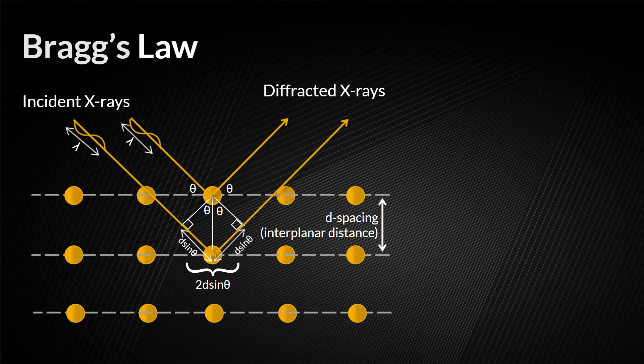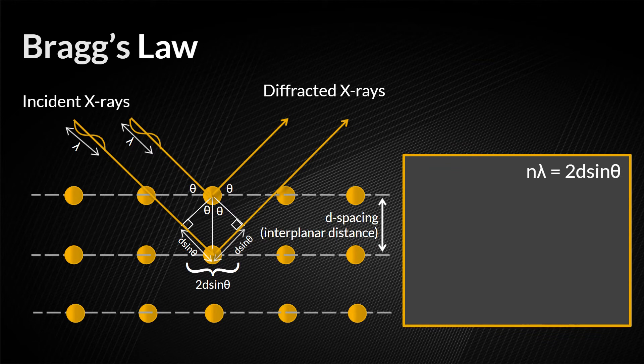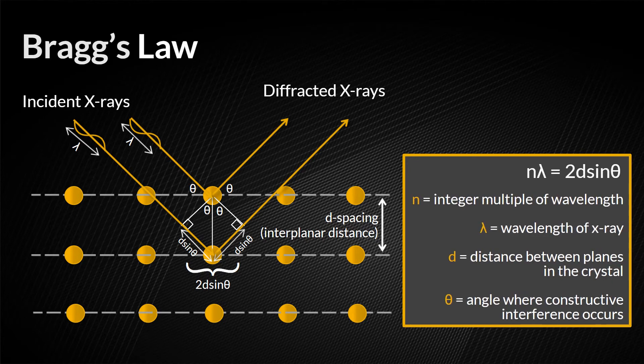Bragg's law is represented with the following equation: n lambda equals 2d sin theta, where n is an integer multiple of the wavelength, lambda is the wavelength of the X-ray, d is the distance between planes in the crystal, and theta is the angle where constructive interference occurs.